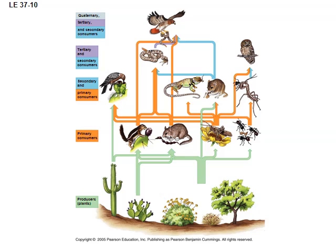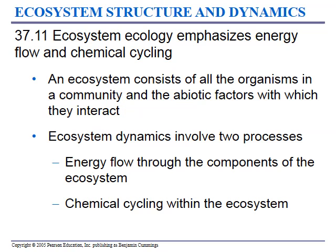The energy and nutrients start at the production level and end up at the consumers — ultimately the tertiary or quaternary consumer at the top. Ecosystem ecology emphasizes energy flow and chemical cycling. An ecosystem consists of all the organisms in a community and the abiotic factors with which they interact. Ecosystem dynamics involve two processes: energy flow through the components of the ecosystem and chemical cycling within the ecosystem. The energy is actually going to get lost through heat, but the chemicals cycle because they don't disappear — we just keep reusing them.